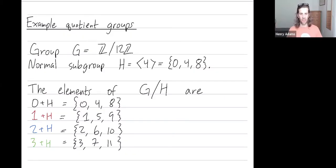Hey folks, I want to give some examples of quotient groups. Our first example will have our larger group G be Z mod 12Z, so the numbers from 0 up to 11 under addition mod 12.